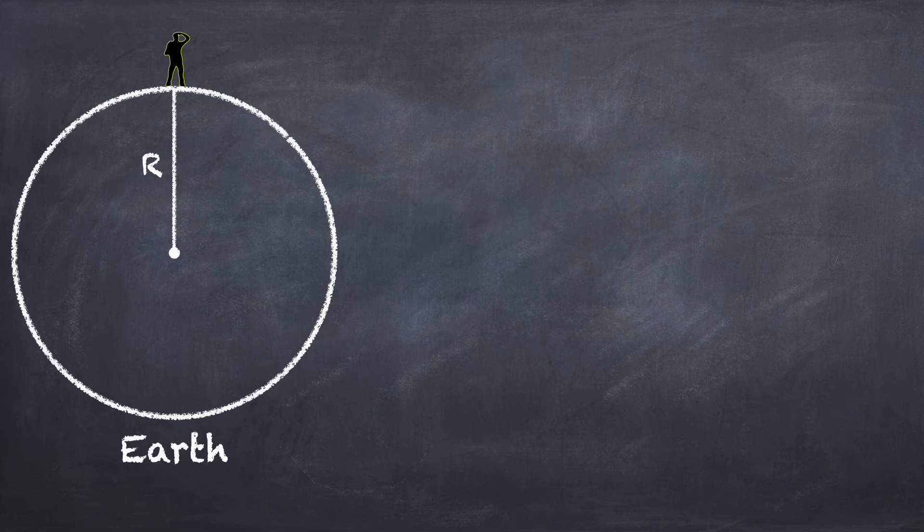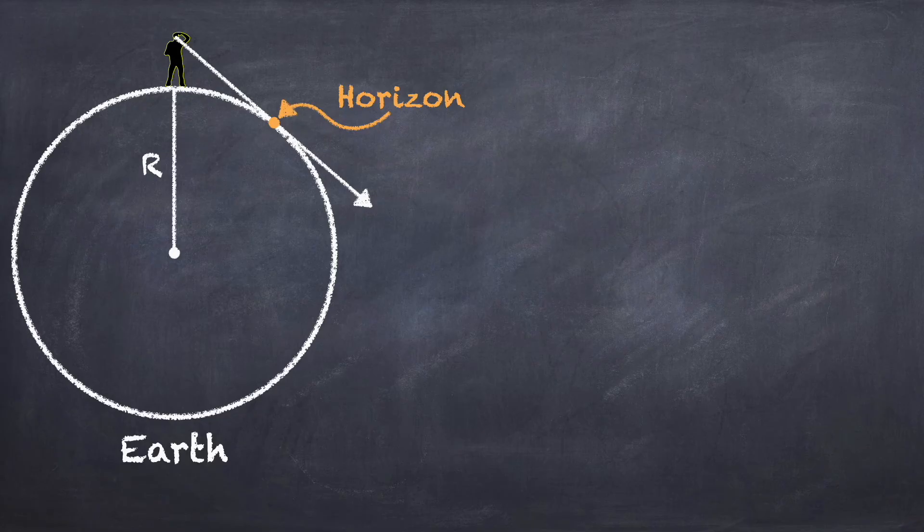When you look out at the horizon, the horizon will be the point at which your line of sight is tangential to the surface of the Earth. And the distance to the horizon will be this arc length along the surface of the Earth, which I'm calling d.